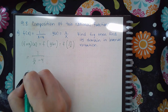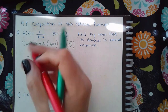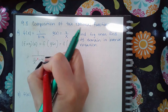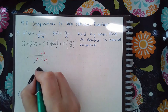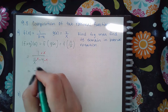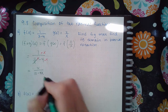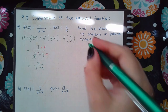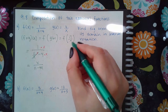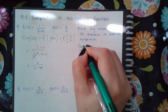To simplify this, I have to multiply everybody by the common denominator, so I get x over — those are gone — 11 minus 4x. And that's as far as I can simplify it.